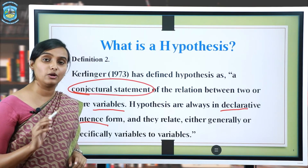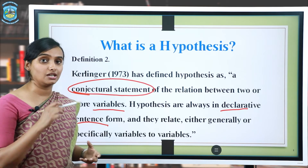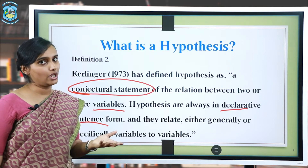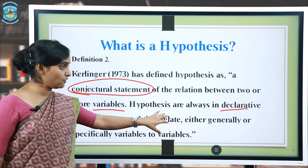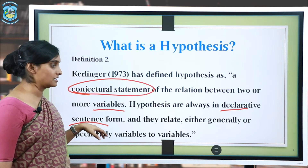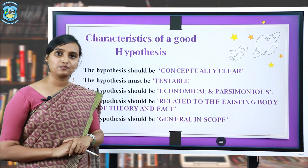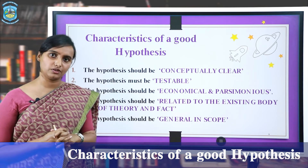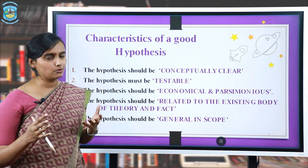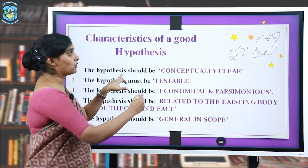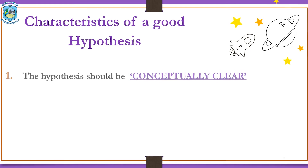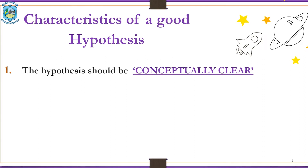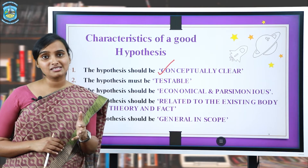Every time we write a hypothesis, we mention it in the form of a declarative statement. We declare it — whether it is true or not, only the end of the research will tell us. In contrast, a problem is written as a question in the form of interrogation. Since a hypothesis is a testable solution, it cannot be in the form of a question; hence we always write it as a declarative statement. A hypothesis should also be conceptually clear — there should be no ambiguity, and the solution must sound possible and grounded in theory or evidence.